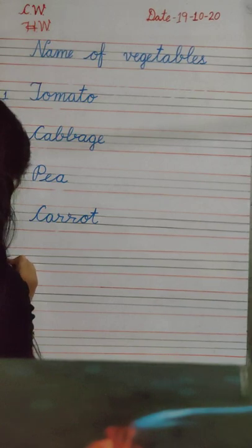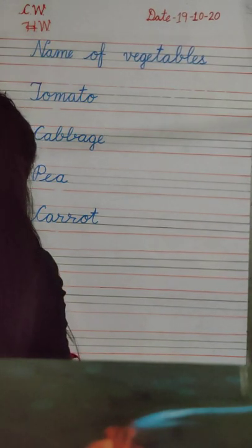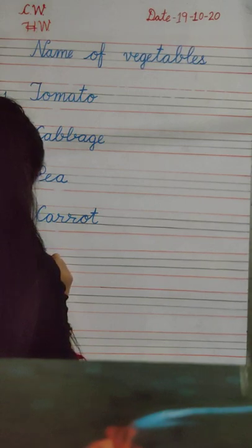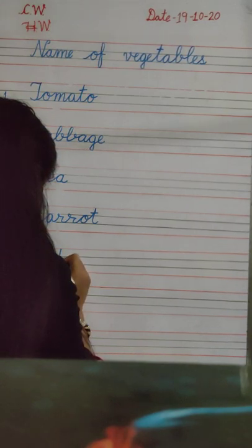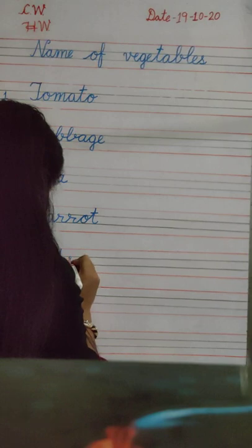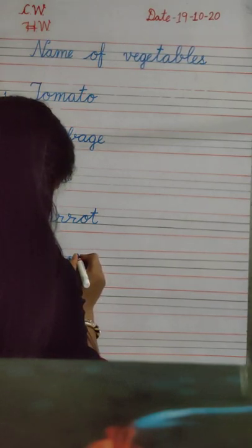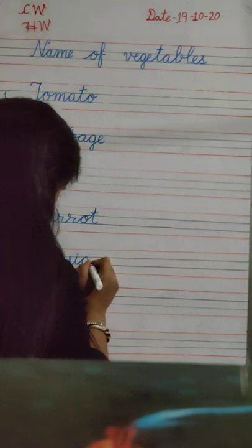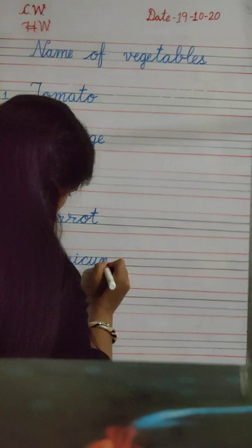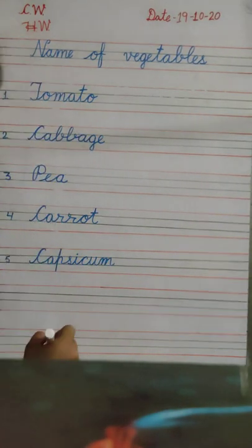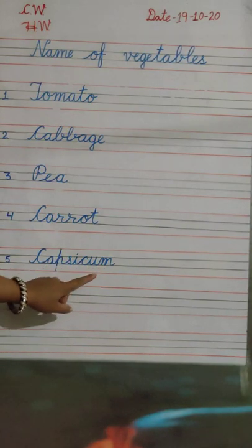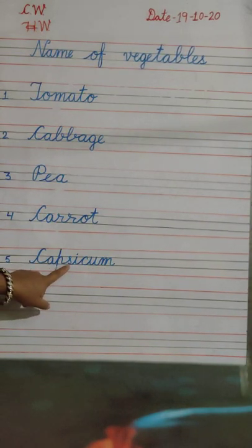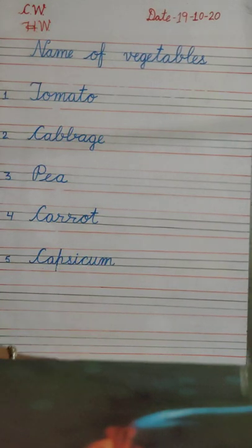Next, number 5. C, A, P, S, I, C, U, M. Capsicum. C, A, P, S, I, C, U, M. Capsicum. Okay?